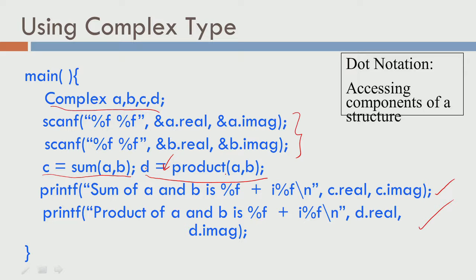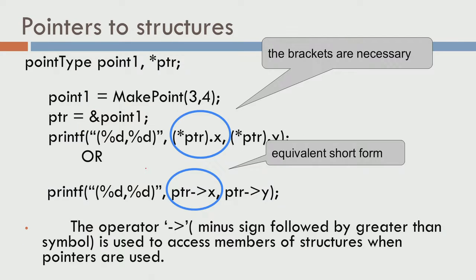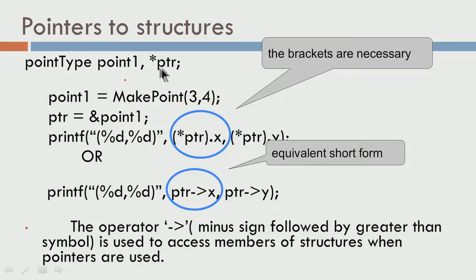As of now, I did not show you a mechanism to pass pointers to structures, so we will do that now. What we have is: we are going to have point type Pt1 and star Ptr. Point type is defined to be struct point. Pt1 is a variable of the data type struct point, and star Ptr is a pointer to the structure of the type point — it is a pointer to point type data type.